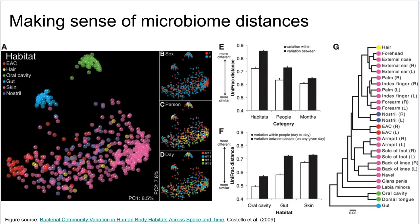In an ordination plot, each sample is represented by a single point, and the points can be colored by information we have about those samples. In the figure, panels A through D all lay out the points exactly the same — what differs across them is how the points are colored. Panel A colors by body site (habitat), panel B by the sex of the subject, panel C by the individual subject identifier, and panel D by the day the sample was collected.